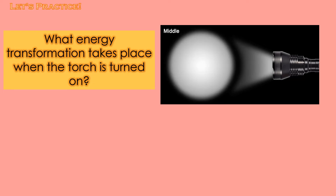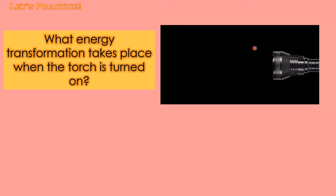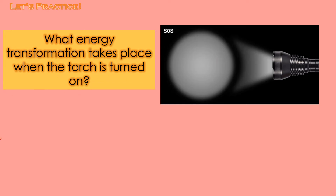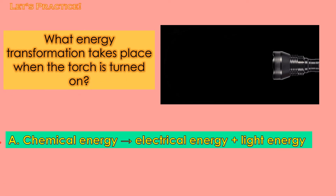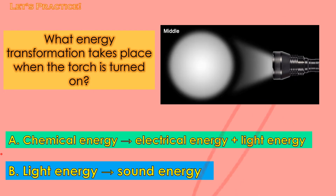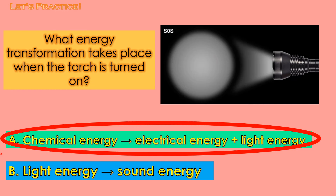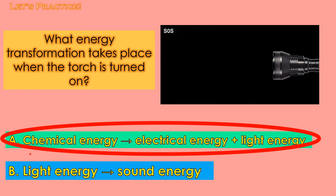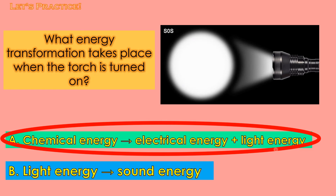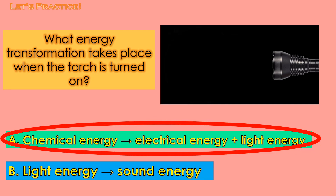How about this one? This is a torch or a flashlight. What energy transformation takes place when the torch is turned on? Let's choose between A and B. One, two, and three. The correct answer is letter A. Chemical energy transforms into electrical energy and then light energy. Good job, kids!